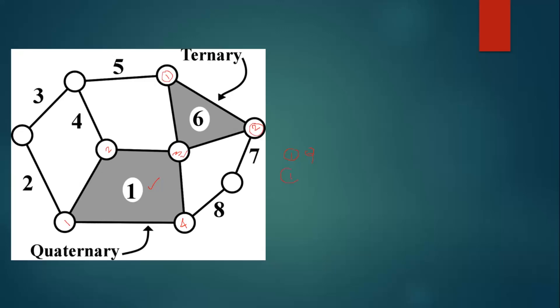Take link six - link six has three nodes: one, two, and three. So we have only one ternary link. The remaining links are binary links: link 2, link 3, link 4, link 5, link 7, and link 8.